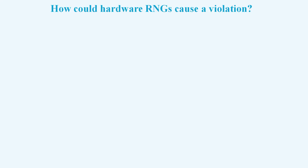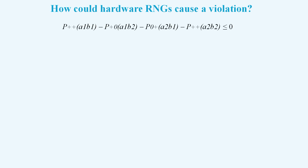Let's demonstrate this with a simple made-up example. This is the inequality we want to violate. The four terms are probabilities, where plus means detected and zero means not detected. So the third term, P(0+) of A2B1, means the probability of not detected at side A but detected at side B for angle settings A2B1.